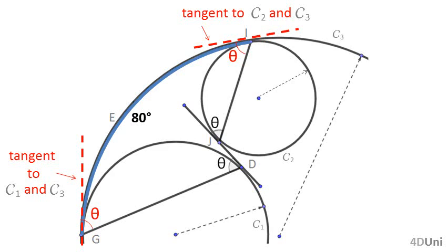What we have done until now is to see how the unknown theta is related to other values in the figure. Now, because we don't know yet how to relate the unknown theta with the known value — that is the angular measure of arc GEI, which is 80 degrees — what we can do is see how that known value is related to other values in the figure.